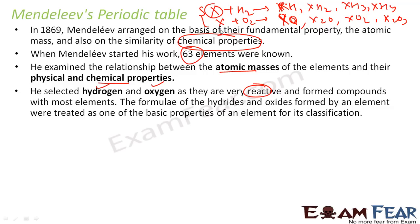He also used atomic mass to arrange the elements. The formula of hydrides and the oxides was one of the critical parameters for classification of elements.